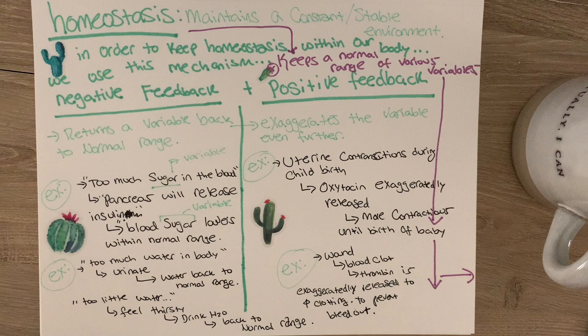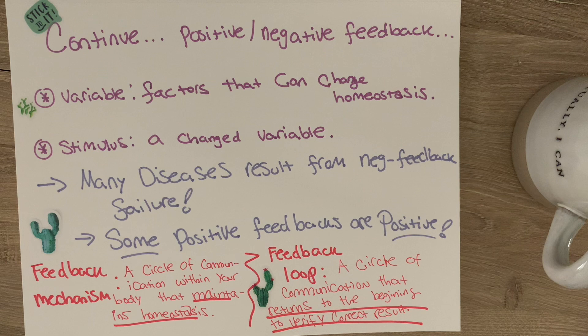As you can see, positive feedback can actually be a good thing. Importantly, many diseases result from negative feedback failure — that's a high-yield exam point. One last distinction: feedback mechanism and feedback loop are not the same thing. A feedback mechanism is a circle of communication within your body that maintains homeostasis. A feedback loop is a circle of communication that returns to the beginning to verify correct results. They're two completely different things.